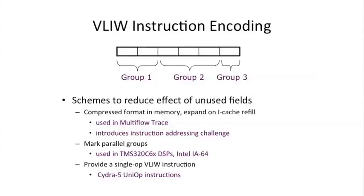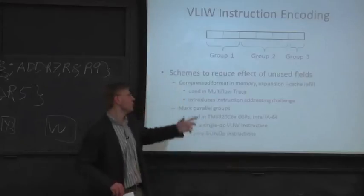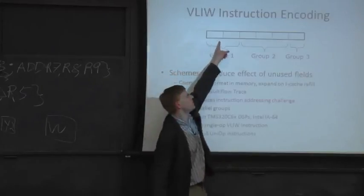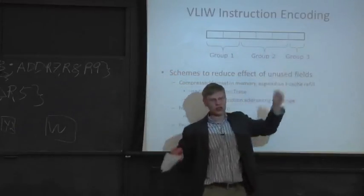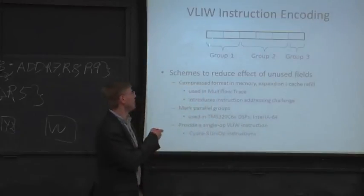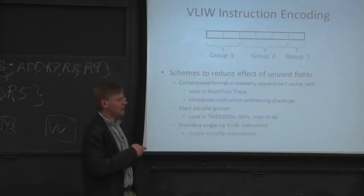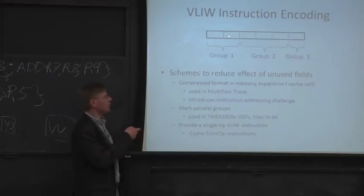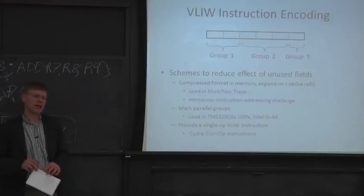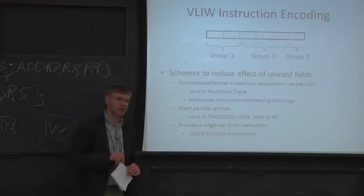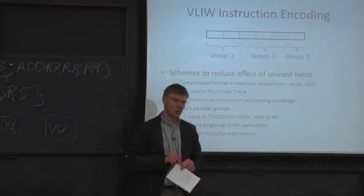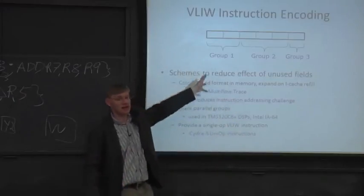The first thing people try to do is they try to come up with compressed instruction encodings, or fancier instruction encodings. When you go to do this, it makes the front end more complicated. So here we have some instruction. But inside of the instruction, we can have different groups which inside of the group executes parallel, but between groups is not parallel. So something like the Itanium processor, or the IA64 processor from Intel, actually looks something like that.